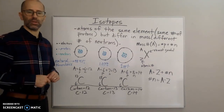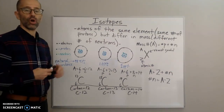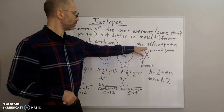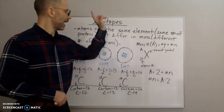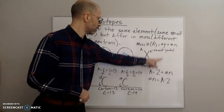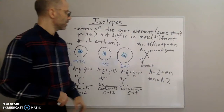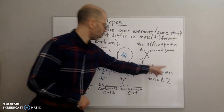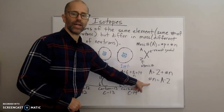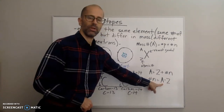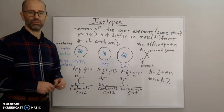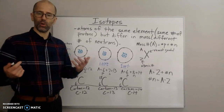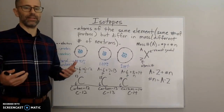To determine the number of neutrons in an isotope: since the mass number A equals protons plus neutrons, and the atomic number Z equals the number of protons, you can solve for neutrons. The number of neutrons equals the mass number minus the atomic number (neutrons = A − Z). I hope this was insightful and helpful.